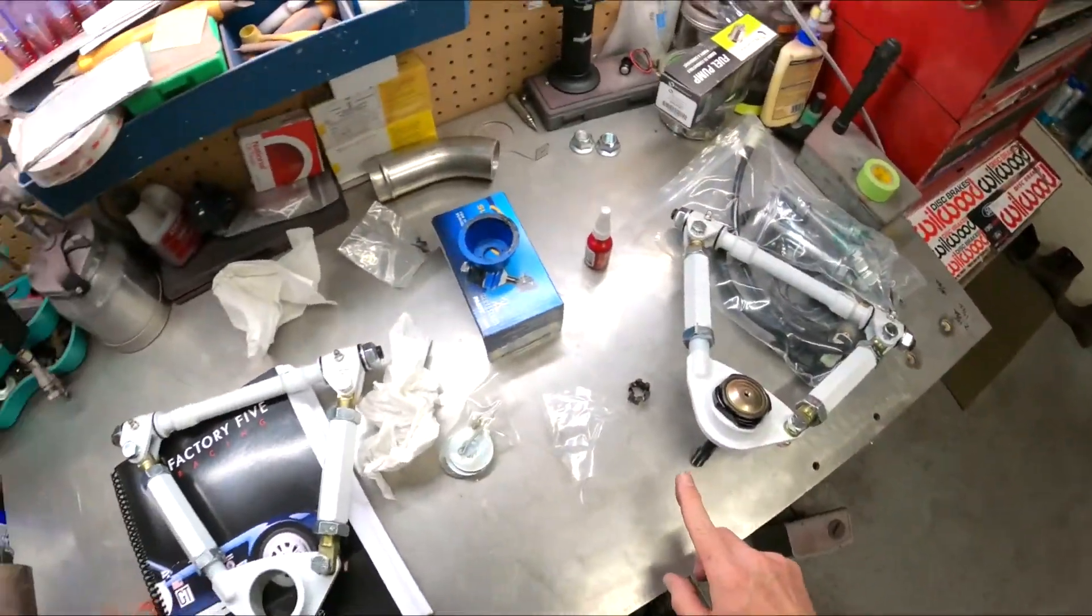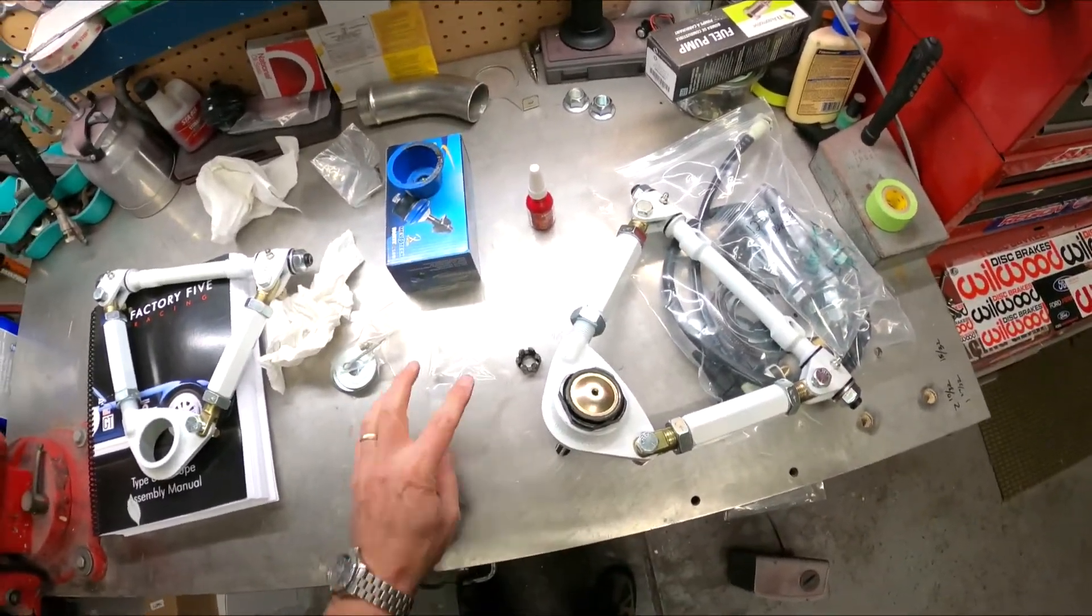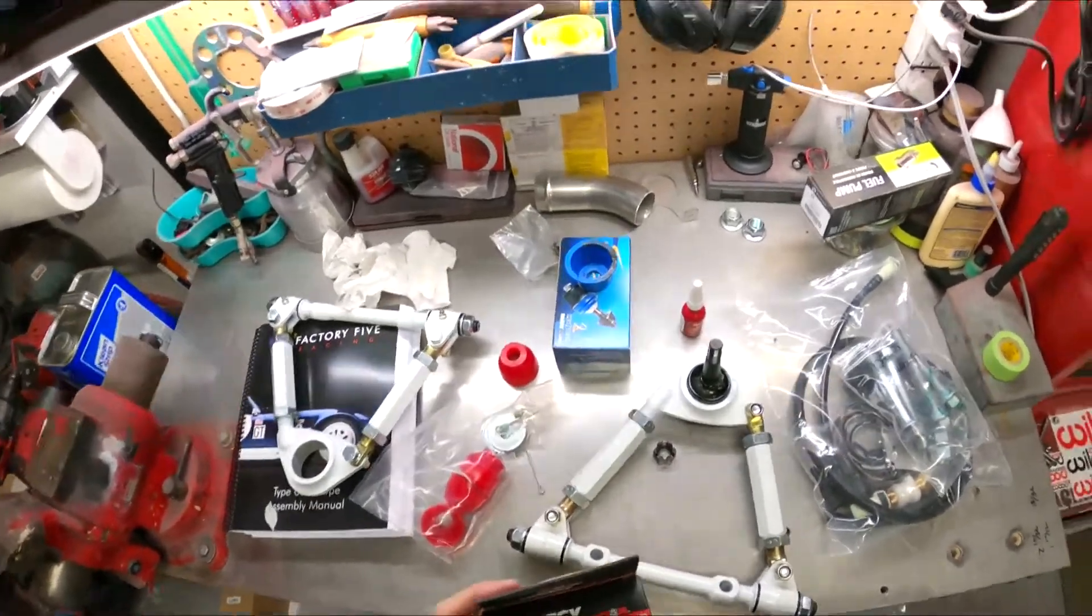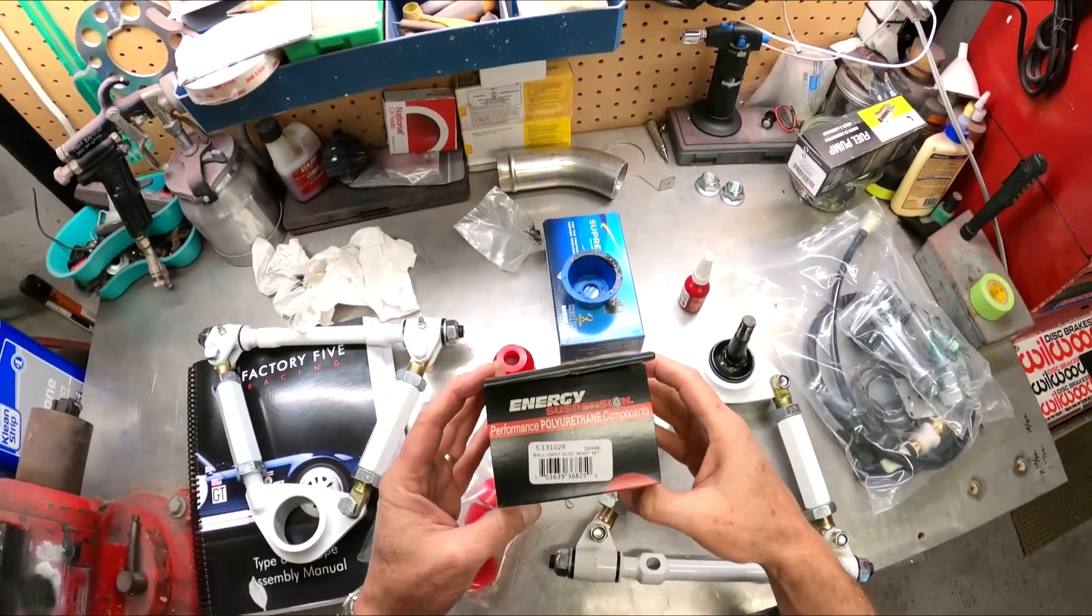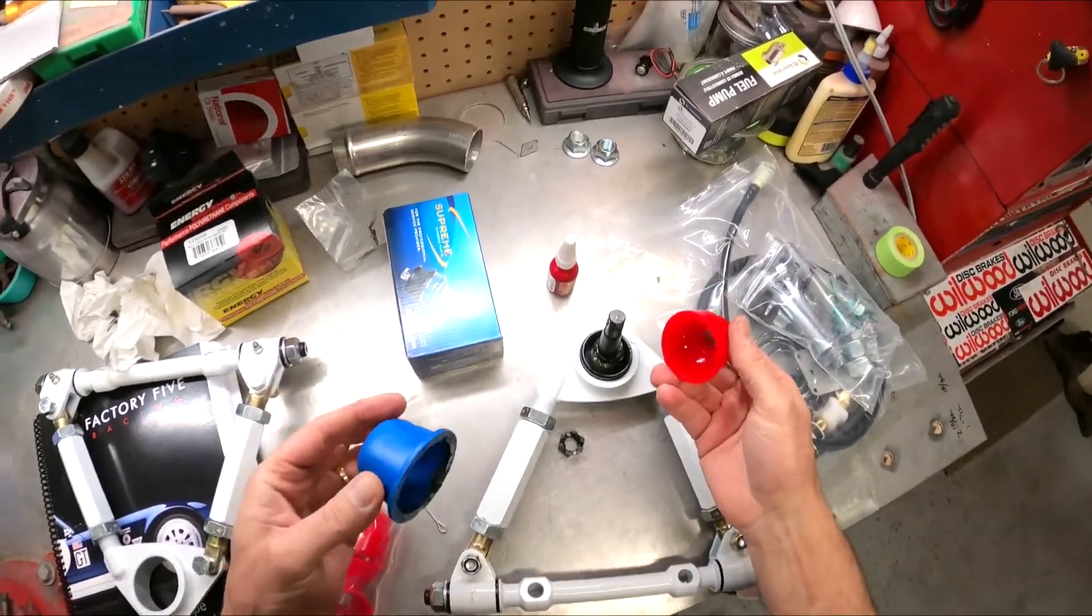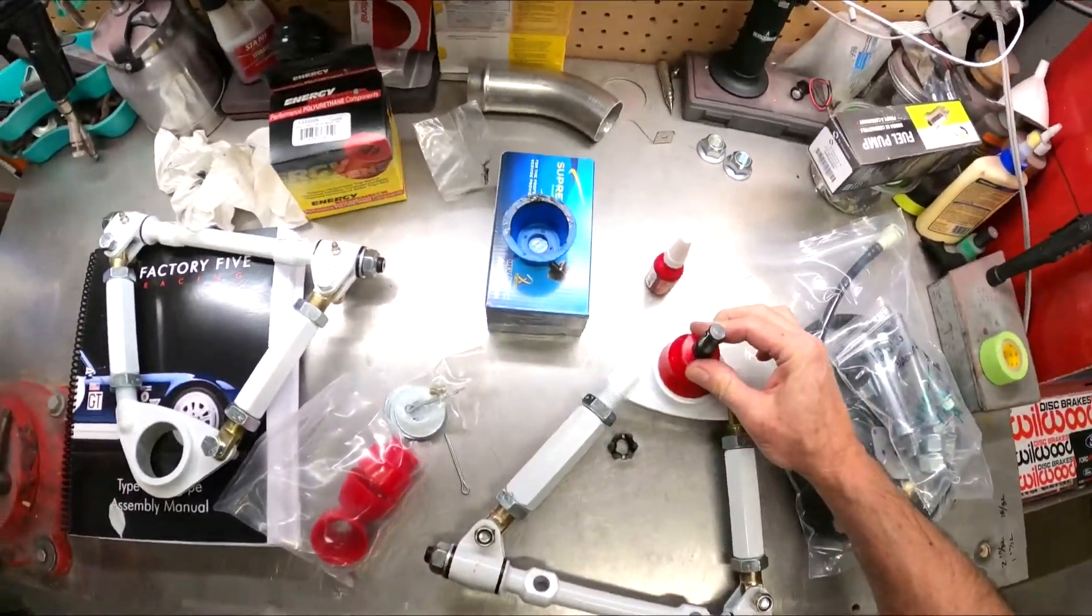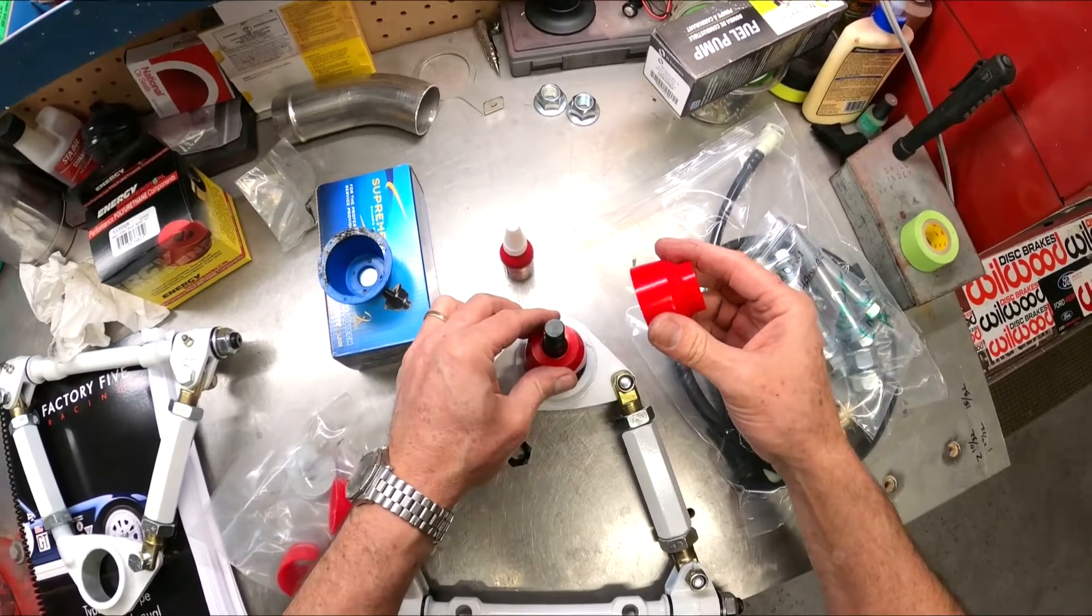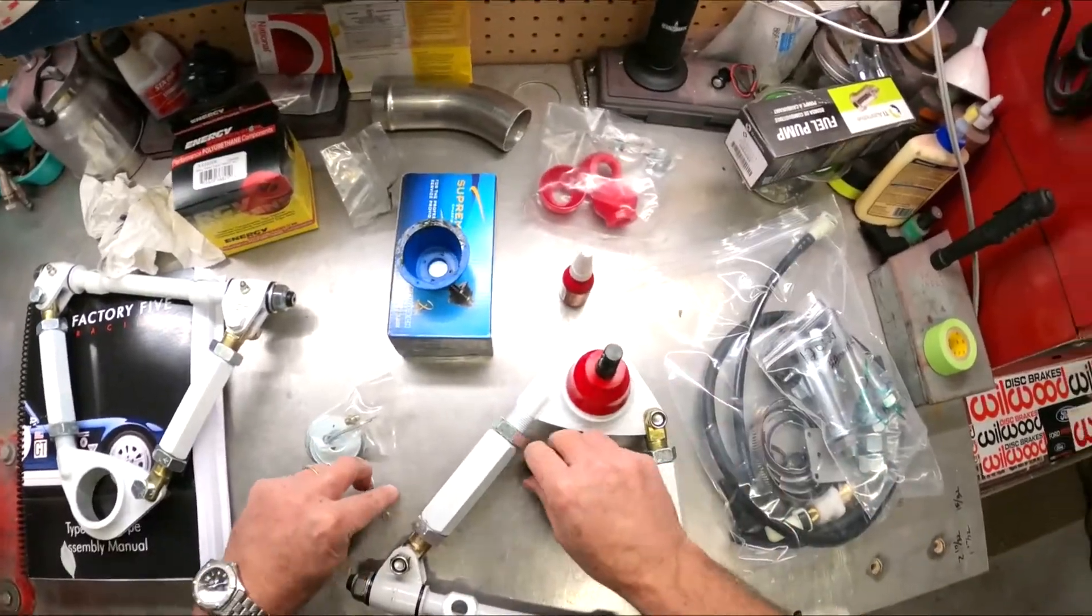One is installed. I've got the Energy Suspension boots because people say these boots don't work very well. I'm switching out these boots with some Energy Suspension, number 5.13102R for red. Don't know why I went red, but that's just the way it is. I'm not sure which one to go with here. I think that would probably be about right. There we go. Once that gets bolted up, that'll be tight.